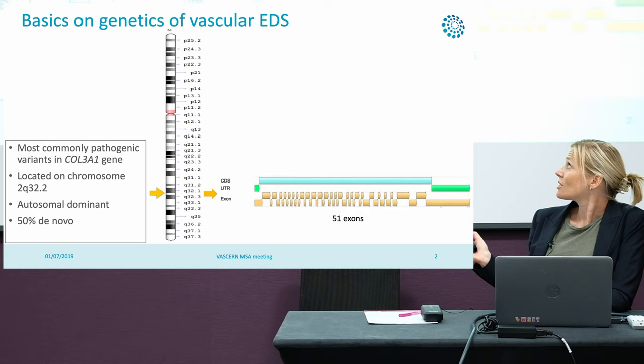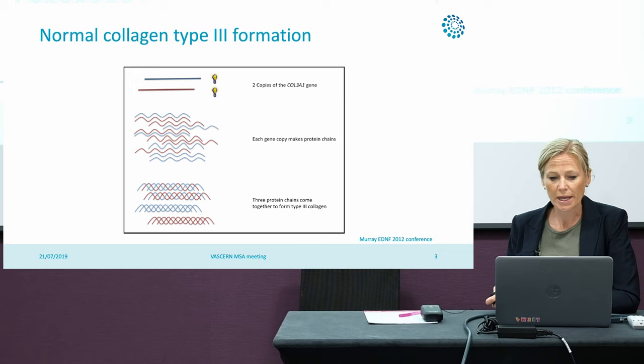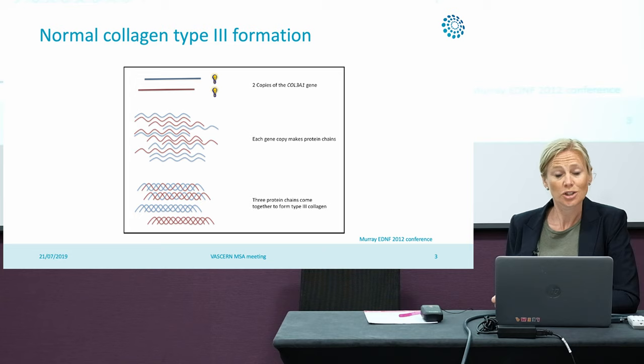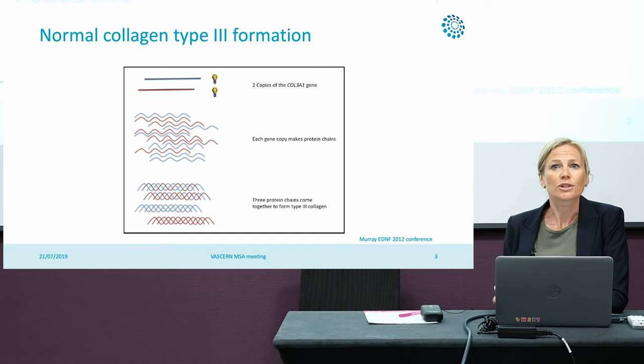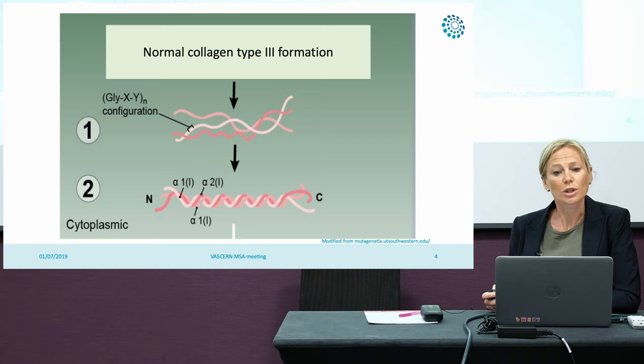The gene consists of 51 exons, and this is an explanation of the normal type 3 collagen formation. You have two copies of the COL3A1 gene and each of these copies encodes for the pro-alpha 1 chain of pro-collagen type 3. Three of these chains come together to form the collagen molecule, and here's a more detailed representation.